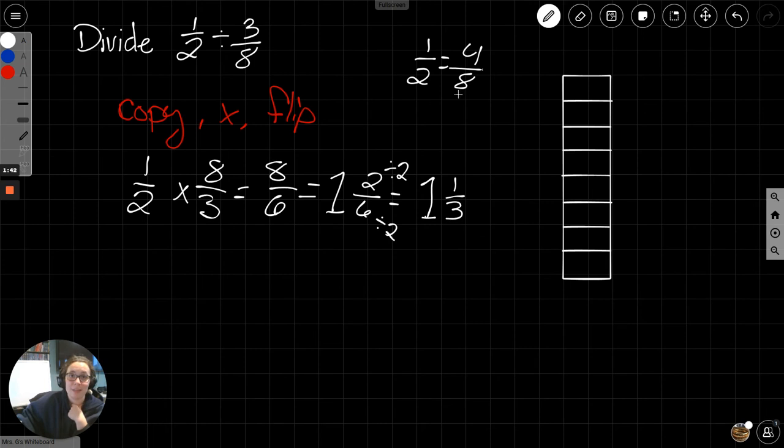So 1 half is equal to 4 eighths. Let's fill in 4 eighths here: 1, 2, 3, 4.